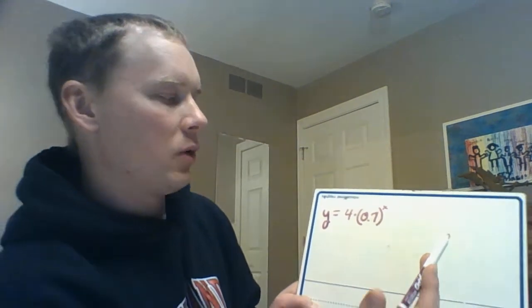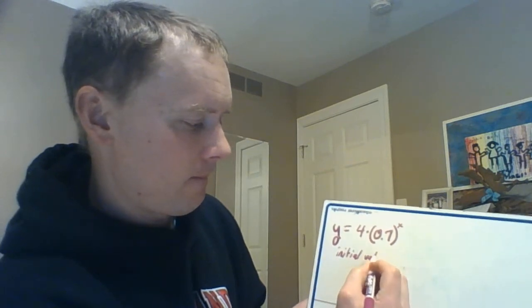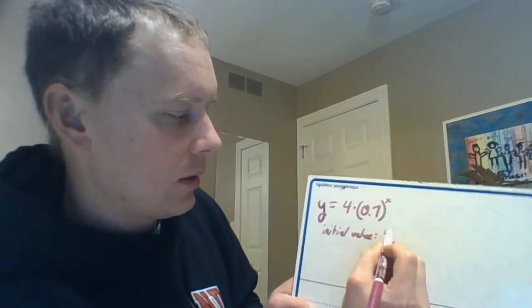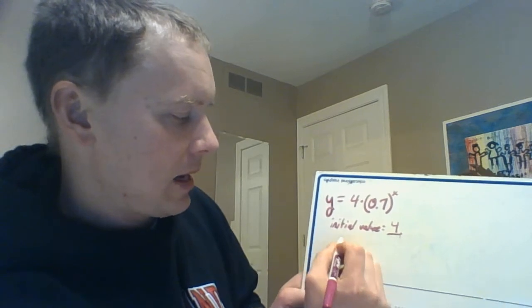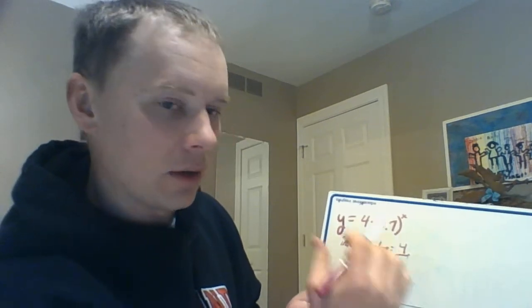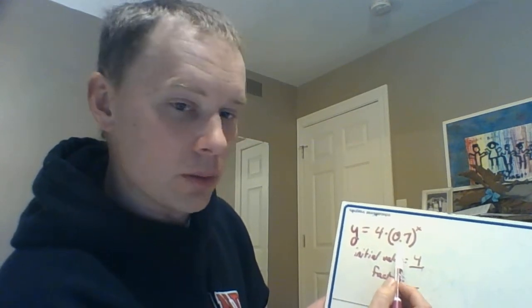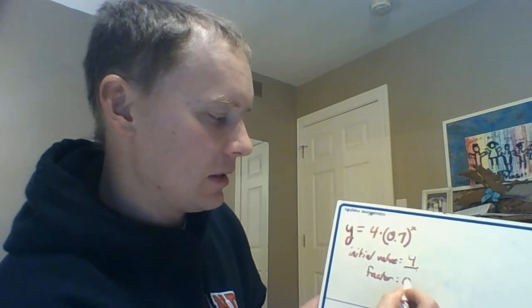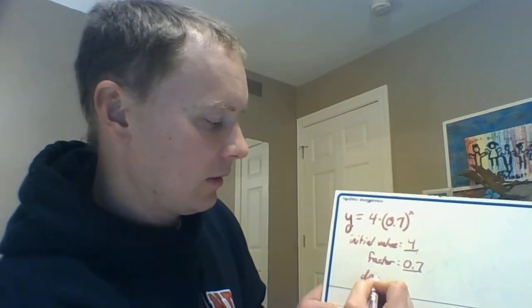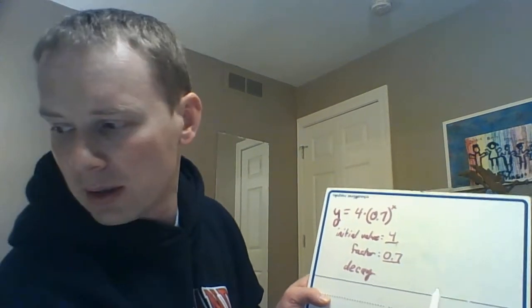In this case, your factor—exponentials always have a factor either that it's growing by or that it's decaying by—and that factor is your base. In this case, 0.7. Now because that number is less than one, that means that this is a decay function, and that's mainly going to be what this lesson is about. Okay, so there's one quick example.